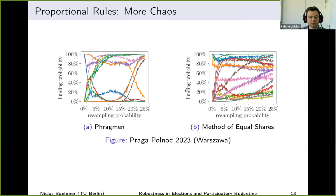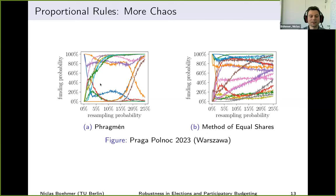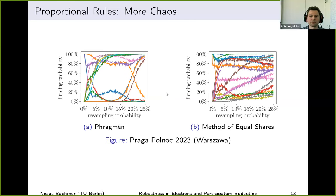We also looked at other rules, such as proportional rules like Method of Equal Shares. The one-line summary of these experiments is that for proportional rules the situation gets more chaotic — project interactions are much more subtle, which is natural because these rules are more clever in what they do and have different objectives than Greedy AV. You also have even less robust funding decisions in certain instances.